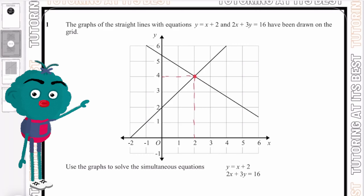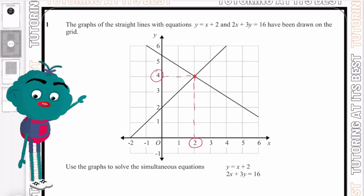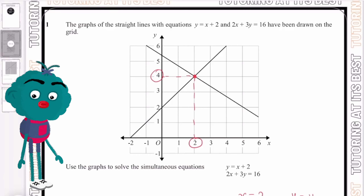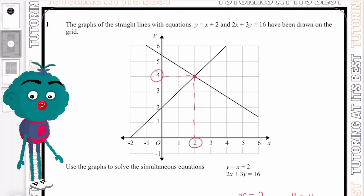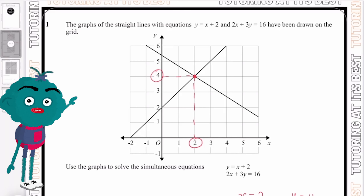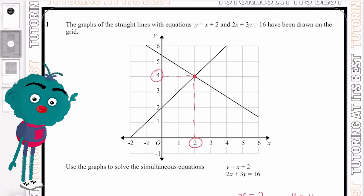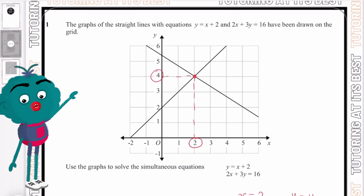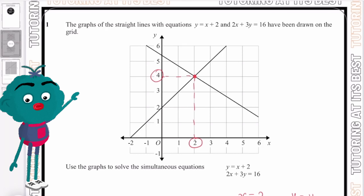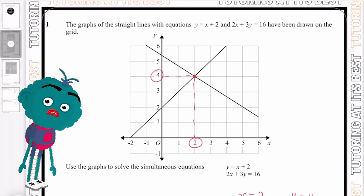So the solution to these equations is x equals 2 and y equals 4, because 2 is on the x-axis and 4 is on the y-axis — it's as simple as that. To find the solutions from the graphs, look for the point where the two graphs cross one another, and that is the solution point.